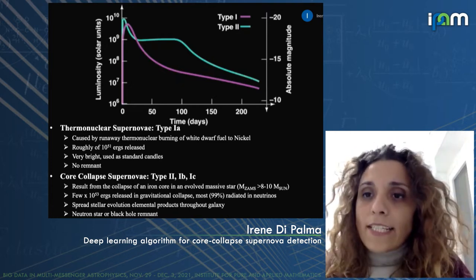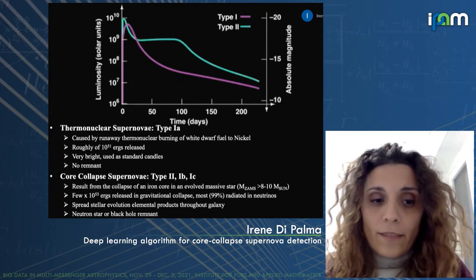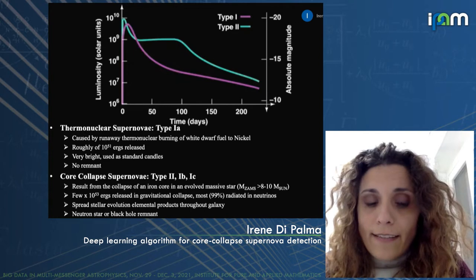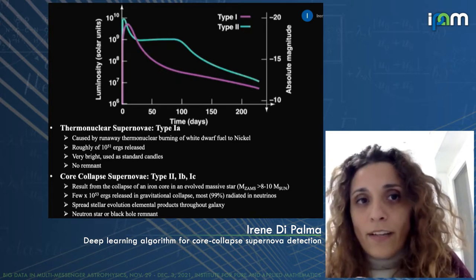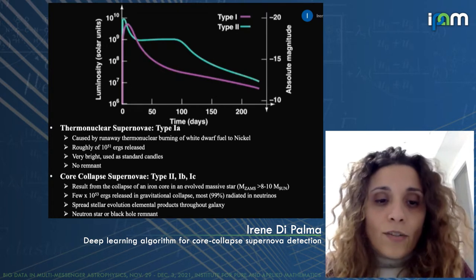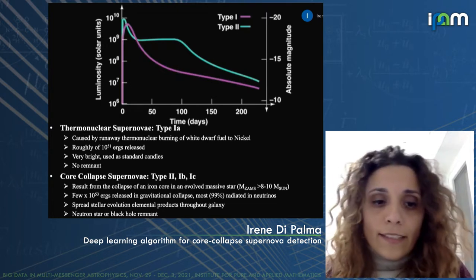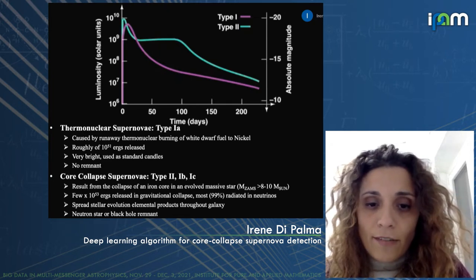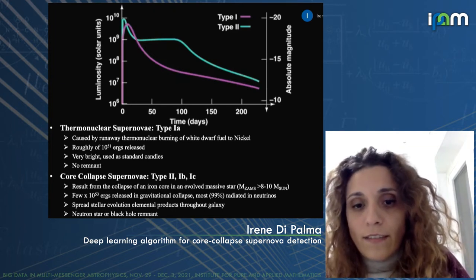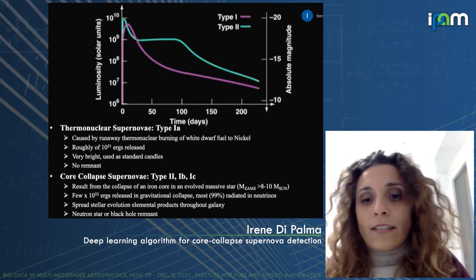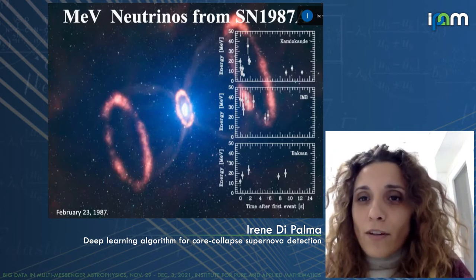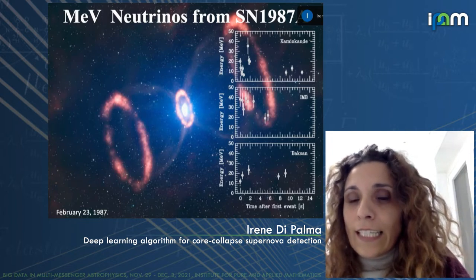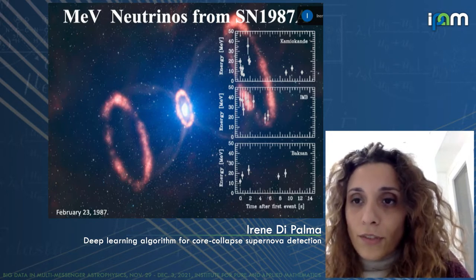The energy released is on the order of roughly 10^51 erg. In the type 2 case — the one we are interested in — the core collapse supernova is the result of the collapse of an iron core in an evolved massive star where the mass is bigger than eight solar masses. The remnant is a neutron star or a black hole, and the energy released in the gravitational collapse is a few times 10^53 erg, most of which — about 99% — is radiated as neutrinos. We have seen MeV neutrinos coming from the core collapse of supernova 1987A on February 23rd, 1987.